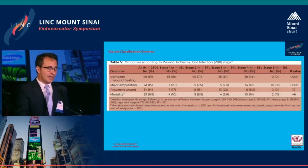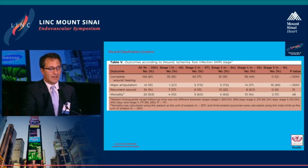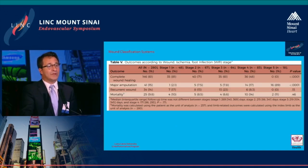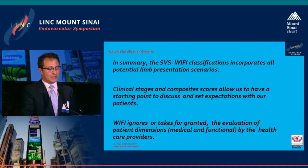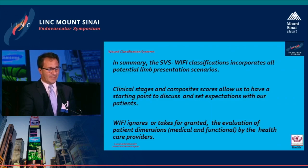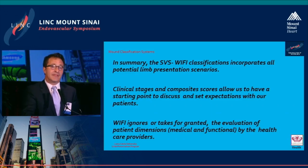An article in press demonstrates that higher stage limb presentation is clearly associated with lower complete wound healing rates and higher major amputation rates, with no significant difference in wound recurrence or mortality. In summary, the SVS WIfI classification incorporates all potential limb presentation scenarios, and clinical stages and composite scores allow a starting point for discussing and setting patient expectations. In my opinion, WIfI still ignores the patient's medical and functional dimensions, which probably need to be incorporated at some point. Thank you very much.